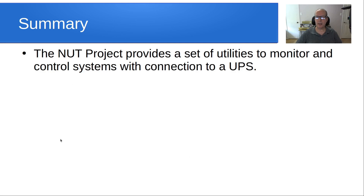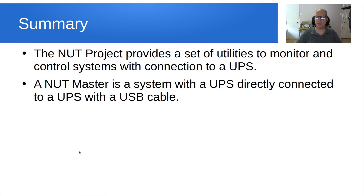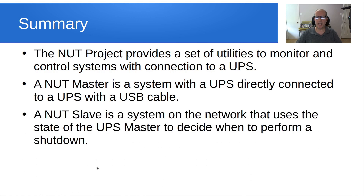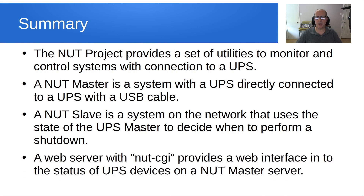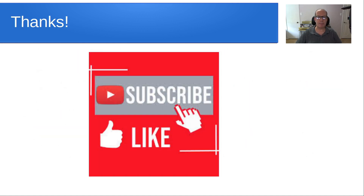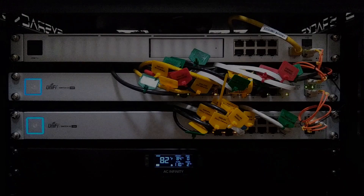In summary: the NUT project provides utilities to monitor and control systems connected to a UPS. A NUT master is a system with a UPS directly connected via USB cable. A NUT slave is a system on your network that uses the master's UPS state to decide when to perform a shutdown. A web server with nut-cgi provides a web interface to UPS device status. Please subscribe, like the channel, hit the notification bell, and we'll see you next time.